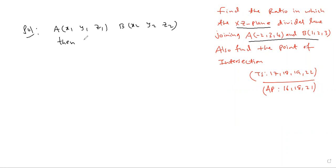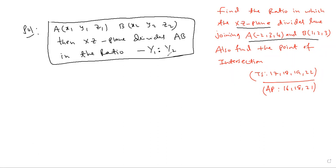then XZ plane divides the line AB in the ratio -Y1 is to Y2. You should remember this. A simple technique: XZ corresponds to Y coordinate, so the answer is -Y1 to Y2. Take negative sign.